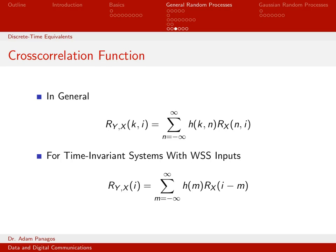Turning our attention to the cross-correlation function: we developed equations for this for continuous time systems as we built up toward deriving the autocorrelation function expression. In general, the cross-correlation between input and output is given by a summation. For the special case of a time-invariant system with a wide-sense stationary input, this simplifies significantly — the two-dimensional time functions turn into one-dimensional functions of the time difference, giving an expression that is essentially a convolution summation.